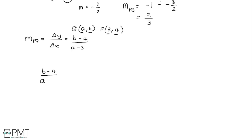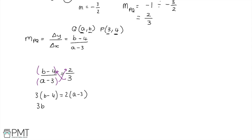Setting the two gradients equal: B minus 4 over A minus 3 is equal to 2 thirds. Cross multiplying — multiplying 3 by B minus 4 and multiplying A minus 3 by 2 — gives 3 lots of B minus 4 equals 2 lots of A minus 3, so 3B minus 12 equals 2A minus 6. Adding 12 to both sides and then dividing both sides by 3 leaves B is equal to 2 thirds A plus 2, which is the final answer.